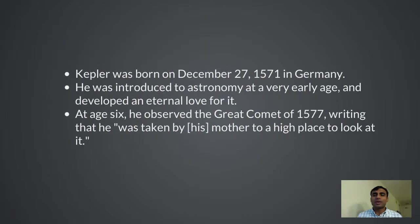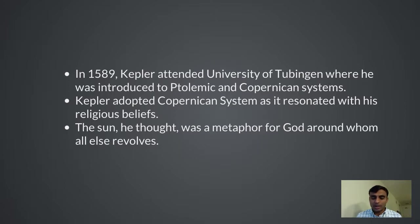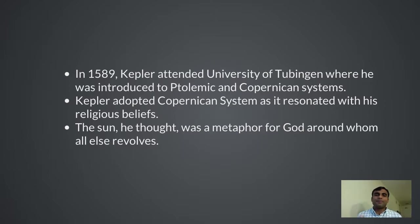Johannes Kepler was born in 1571 and was introduced to astronomy at a very early age. He was taken to a high ground to observe the great comet of 1577 and developed a love for it that lasted an entire lifetime. In 1589, Kepler attended university where his mentor introduced him to both the Copernican system and the Ptolemy system — at a time when the debate had not yet been settled as to which was correct. Kepler adopted the Copernican system because it resonated well with his religious beliefs — he believed that God is the central figure around whom everything revolves, and that the sun is a metaphor for God, around whom our earth revolves.